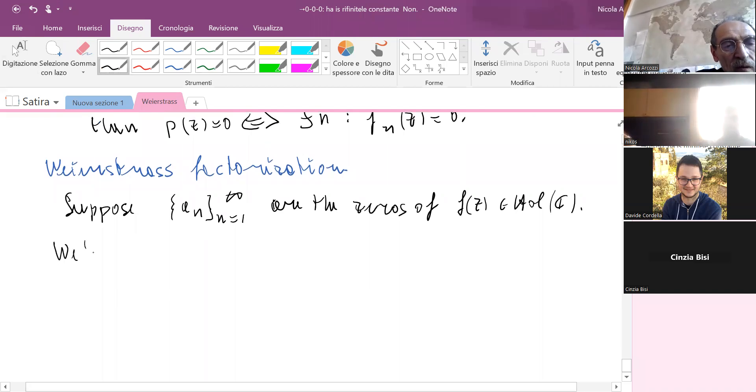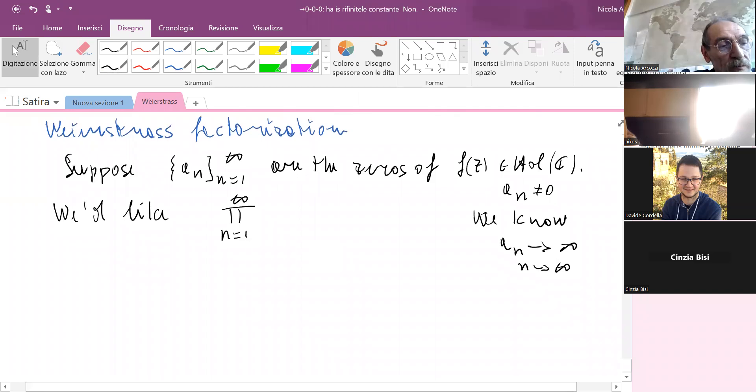Then we would like the product from n=1 to infinity... Say that all of them are different than zero. Since they have an accumulation point, they must converge to infinity. So what we would like to do? We would like this product 1 - z/an to converge.